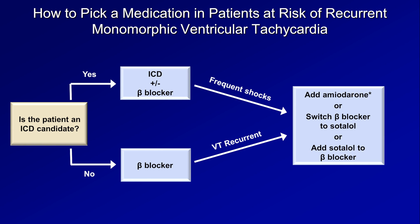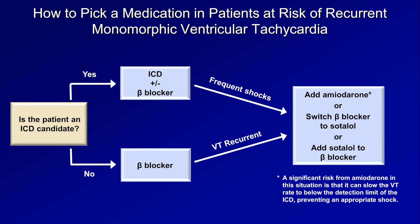One thing regarding the use of amiodarone in this situation is that while it decreases the frequency of VT, it can also slow the rate of the VT when it does recur to below the detection limit of the ICD, thus preventing an appropriate shock. For example, if the ICD is programmed to shock any tachycardia above 150 beats per minute, but amiodarone lowers the rate of a patient's VT from 170 to 140, even if the frequency of VT decreases, those times the VT does occur the ICD will not recognize it and will not shock them. So that's always something to keep in mind when giving amiodarone to a patient with an ICD.